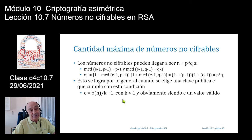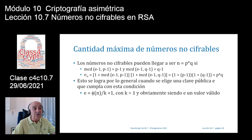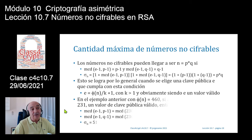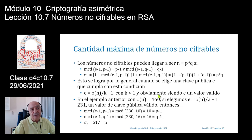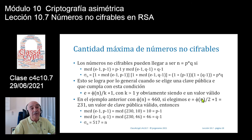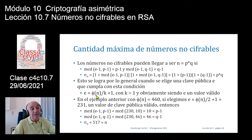Con k=2, fiden=460: 460/2 +1 = 231. Mcd(231,460)=1, es un valor válido. ¿Cuánto vale mcd(e-1, p-1) = mcd(230, 10)? Sale 10 = p-1. Y mcd(e-1, q-1) = mcd(230, 46)? Sale 46 = q-1. Con lo cual para esta clave pública E=231, todo el módulo N=517 iría en claro.